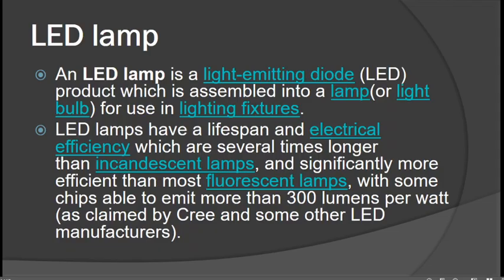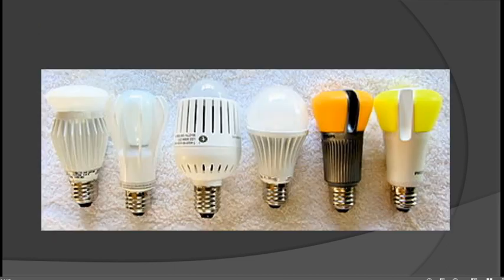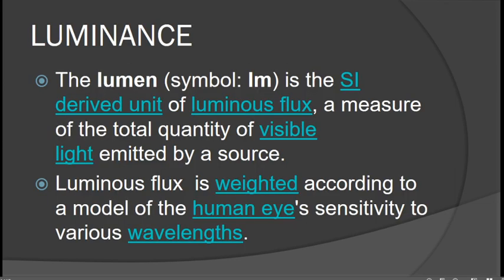The last and now most common type of lamp is the LED lamp, which stands for Light Emitting Diode. A product assembled into a lamp or light bulb for use in lighting fixtures. The advantages of an LED lamp include a longer lifespan and much better electrical efficiency compared to incandescent lamps, and significantly more efficient than fluorescent lamps — with some chips able to emit more than 300 lumens per watt.